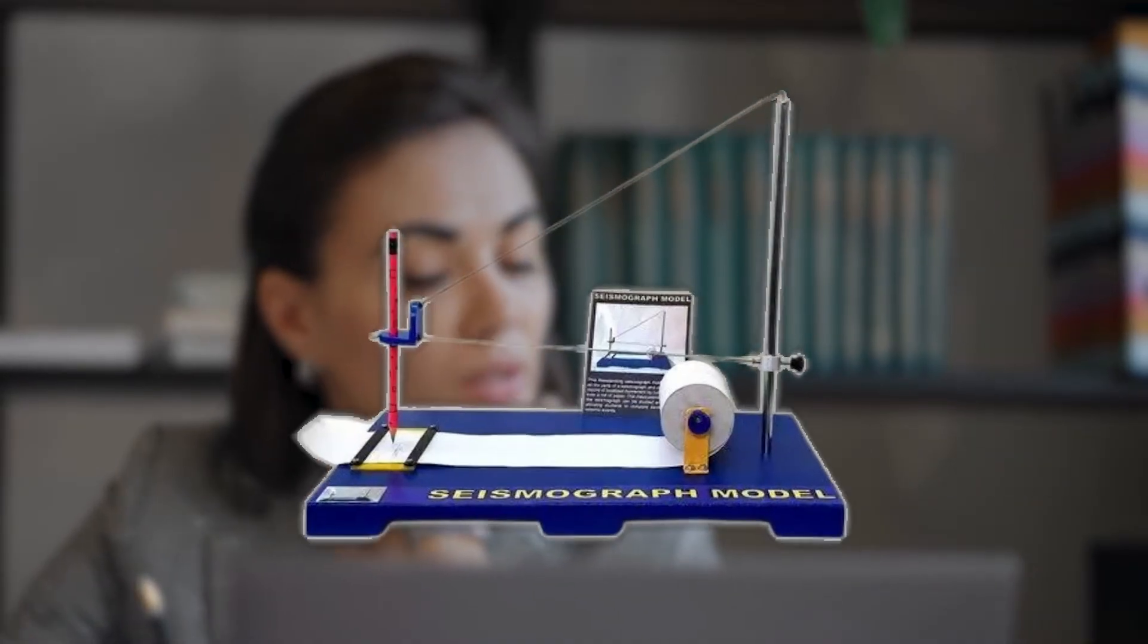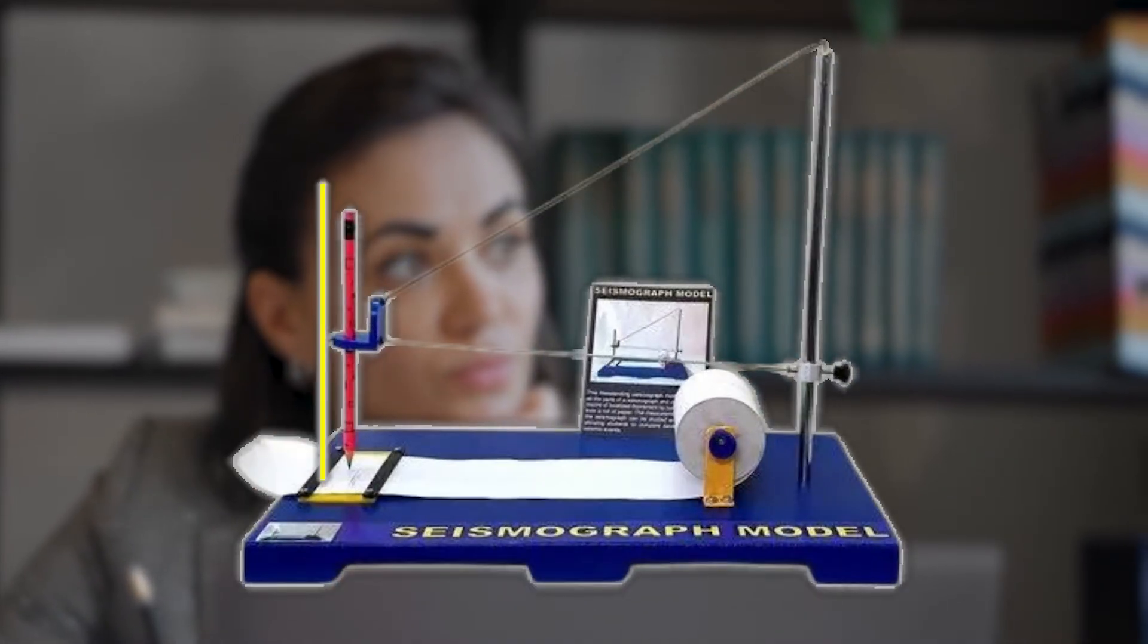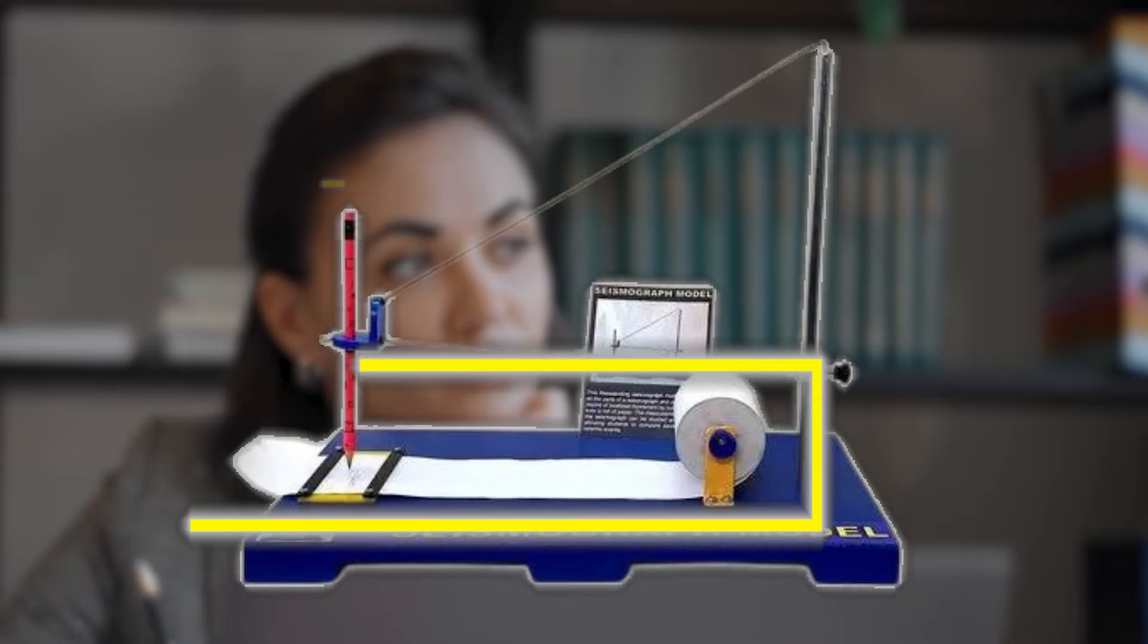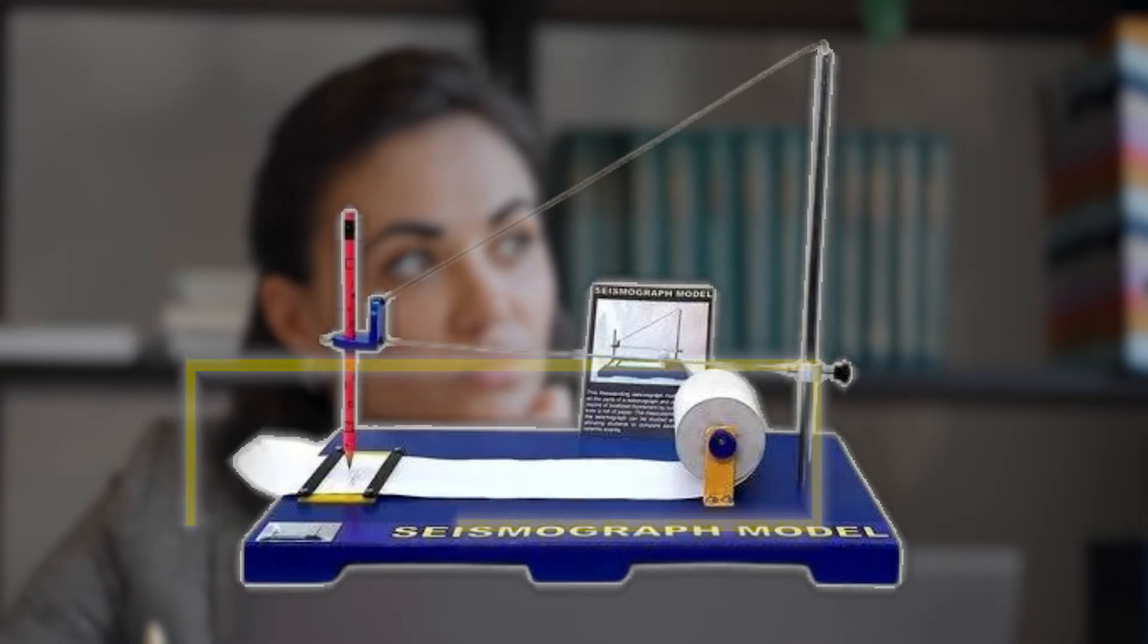Imagine a simple seismograph: a large weight hanging from a rope over a table. Attach a pen to the weight and tape a piece of paper to the table so the pen can draw on the paper.